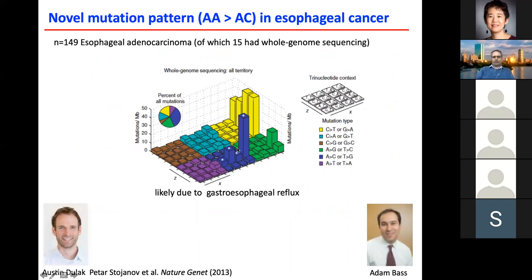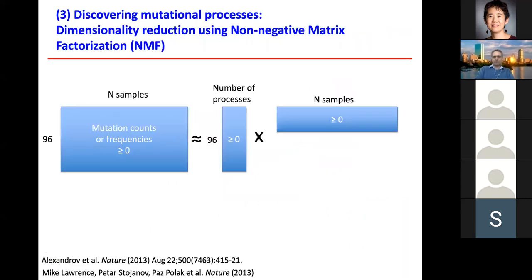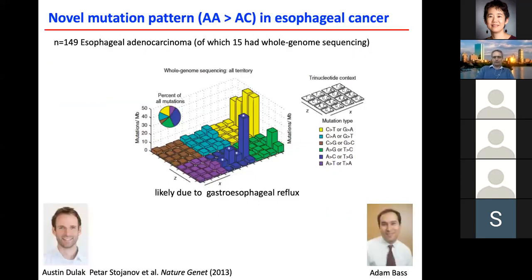One additional signature we found was in esophageal cancer, together with Adam Bass and Austin — a signature associated with gastroesophageal reflux. We now see it in other cancer types as well. This is the A-to-AC substitution, which may be due to gastroesophageal reflux, but it's not entirely clear because we see it in cancer types not related to gastric cancer.